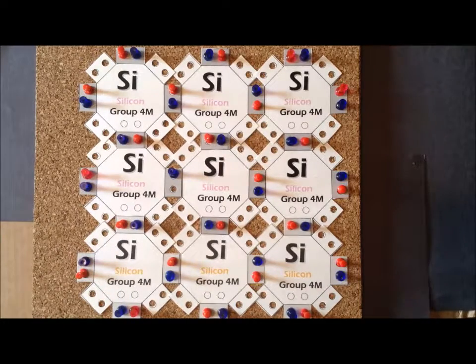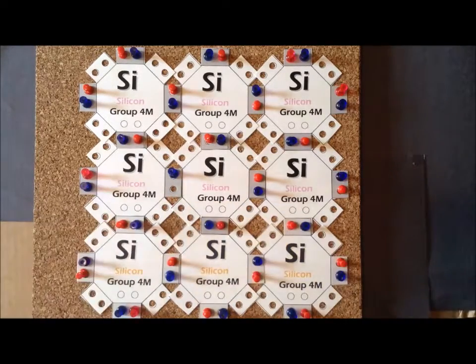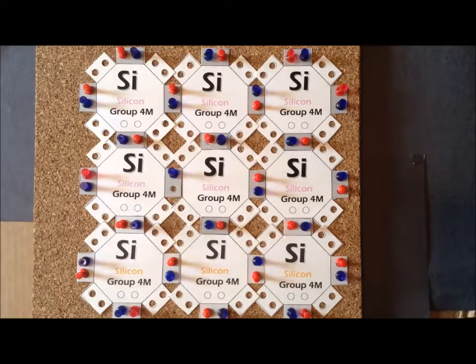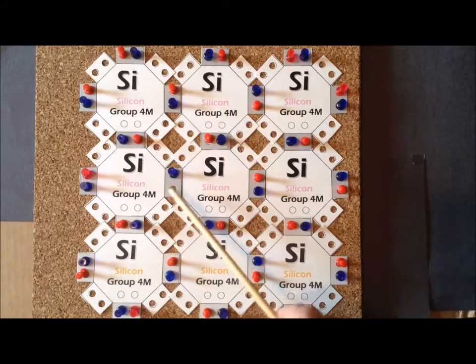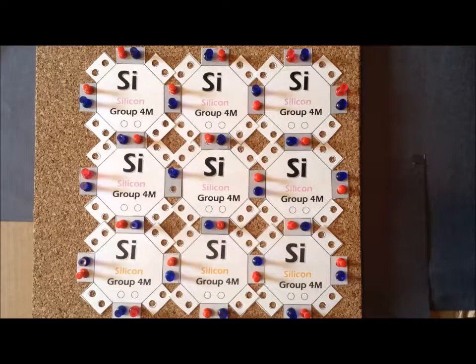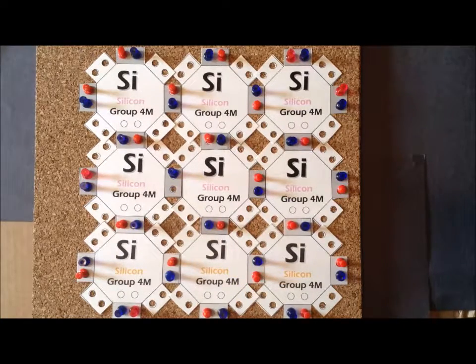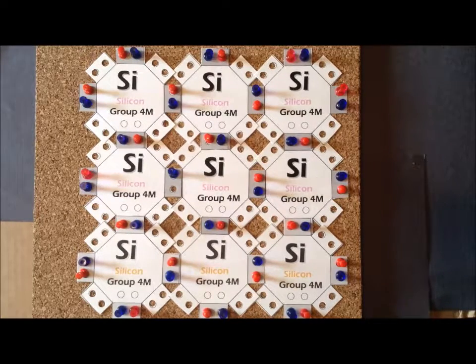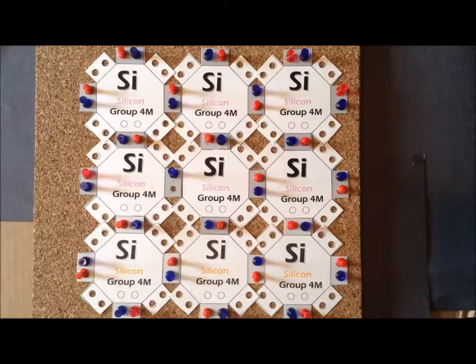Notice that once the electron has been promoted, we have an empty location where an electron could have been but isn't right now. We call these particular structures holes, because in many ways, the absence of an electron acts like the presence of a positively charged particle, which we call a hole.